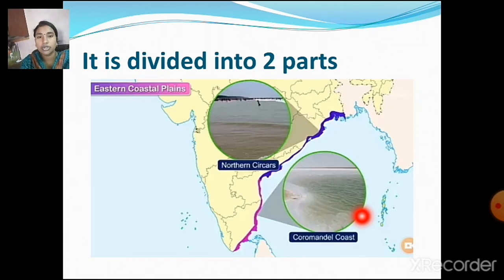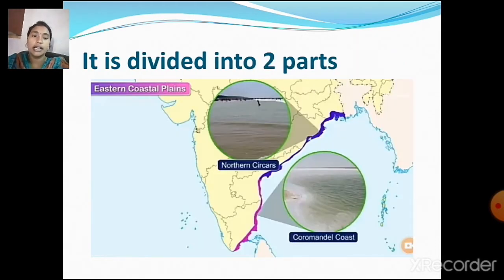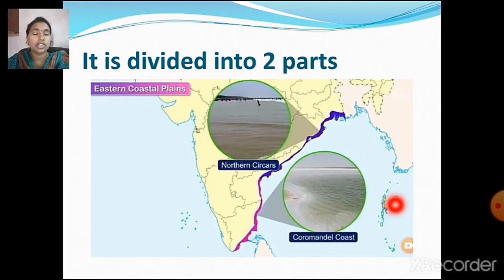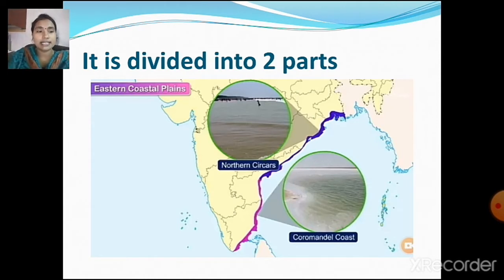The western coast is divided into three parts and the eastern coastal plain is divided into two parts. Now we are going to see what are islands. There are few islands present near the Arabian Sea and the Bay of Bengal. In today's session we are going to see about the islands present in the Arabian Sea and the Bay of Bengal.